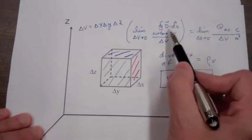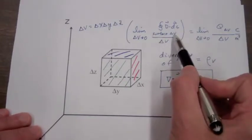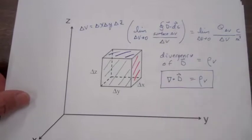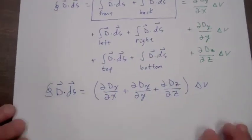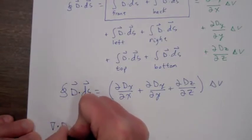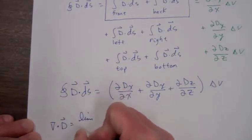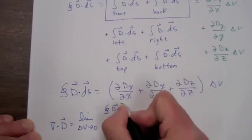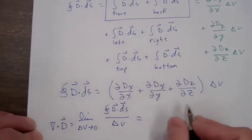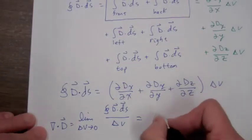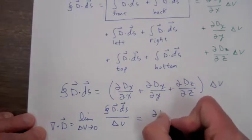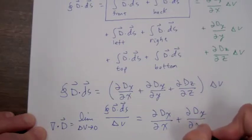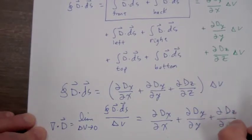Going to our definition of the divergence of D: we take the integral of D dot dS over the surface of our cube, divide by delta v, and take the limit as delta v goes to zero. So the divergence of D equals the limit as delta v goes to zero of the integral of D dot dS over delta v, which equals the partial of Dx with respect to x plus the partial of Dy with respect to y plus the partial of Dz with respect to z.